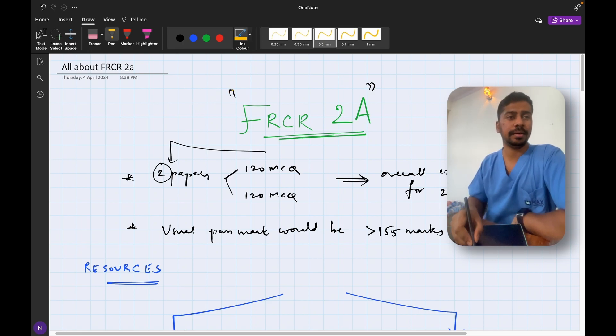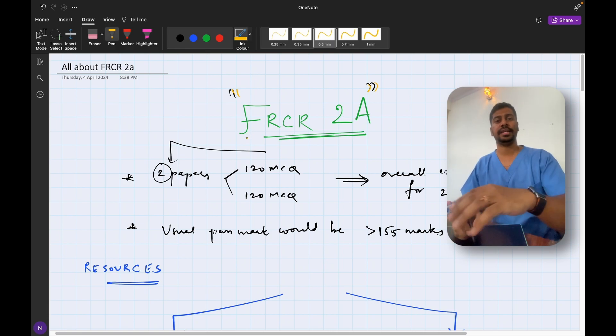So guys, the FRCR 2A exam is relatively a difficult exam because the pass percentage is usually 50%, that means that only 50% of the people who give the exam will actually end up passing. So you need to have a very good structural understanding of the exam pattern so that you can pass the exam without much tension.